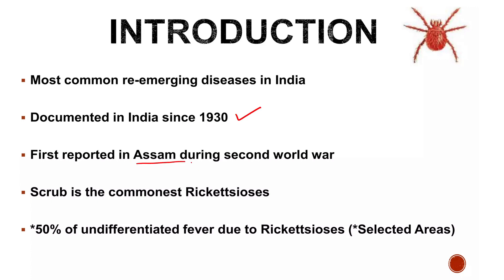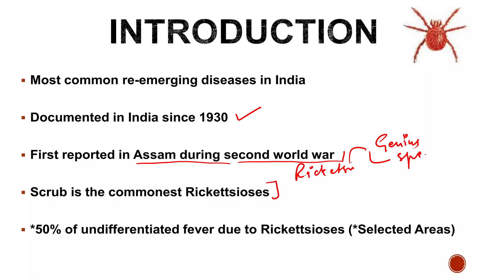Scrub typhus was first reported in Assam during the Second World War. It is the most common rickettsiosis. Rickettsia is a genus with many different species — such as scrub typhus and rocky mountain spotted fever. 50% of undifferentiated fever cases are due to rickettsiosis.